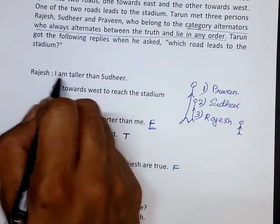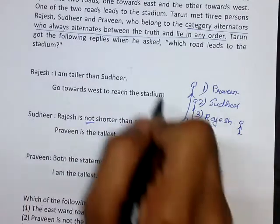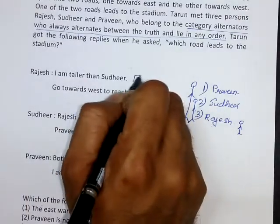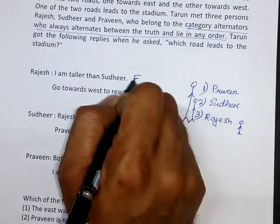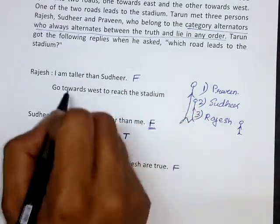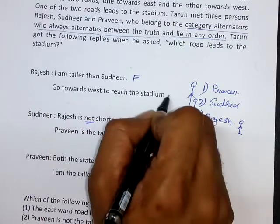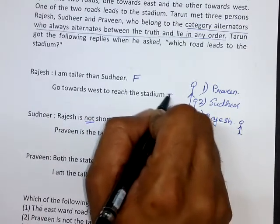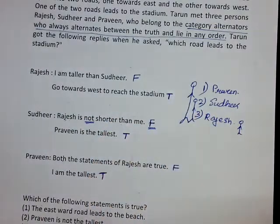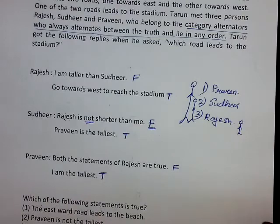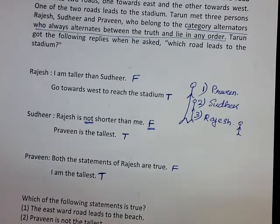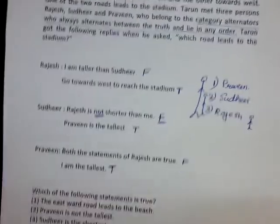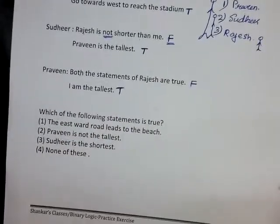Now look at the first statement made by Rajesh. Rajesh is telling that he is taller than Sudhir, which is false. Since the first statement is false, the second statement has to be true — which means going westward leads to the stadium. So the westward road takes one to the stadium.